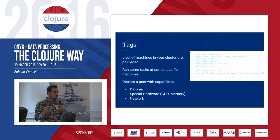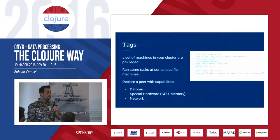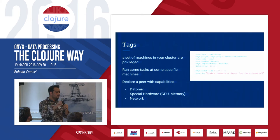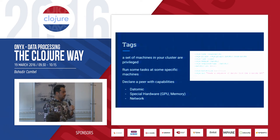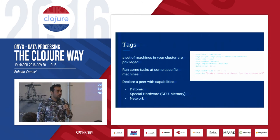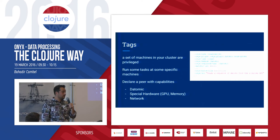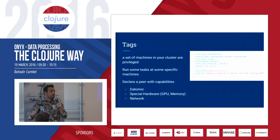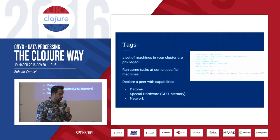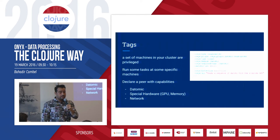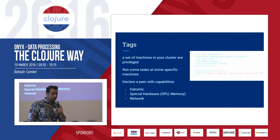You can also assign behaviors to each peer. For example, a peer could be marked as a Datomic peer, so all Datomic-related operations are routed to the same peer. This means you don't need to pay for hundreds of licenses — you could have 10 peers containing the Datomic licensing and transactor, and those will only be assigned Datomic-related tasks. Similarly, you can tag peers with special hardware — for example, machines with huge memory for intensive calculations.